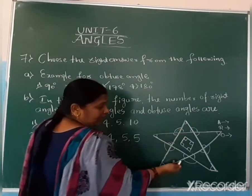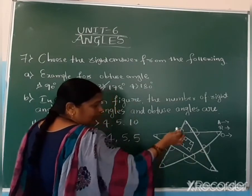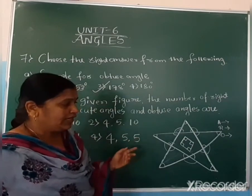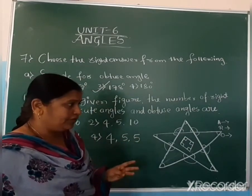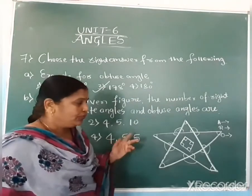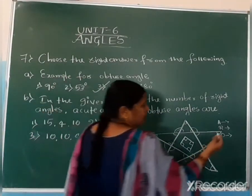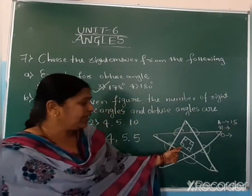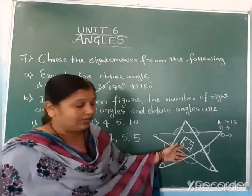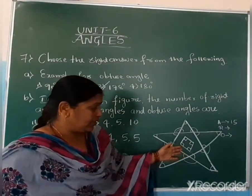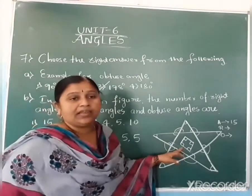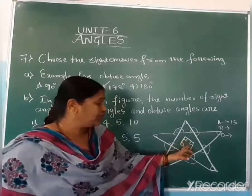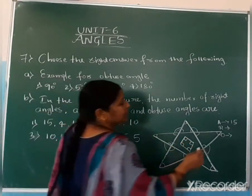First, find how many triangles are there: 1, 2, 3, 4, 5. Five triangles means 5 × 3 = 15 acute angles total. There is one square in the figure, and a square has 4 right angles. So totally 4 right angles.